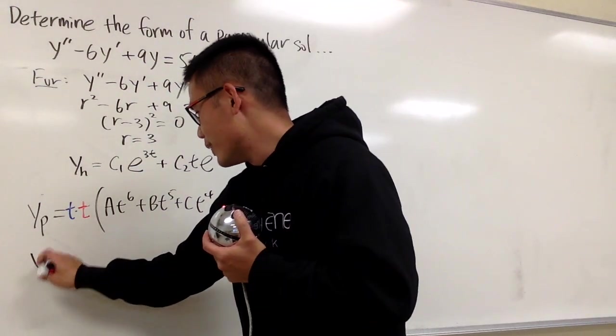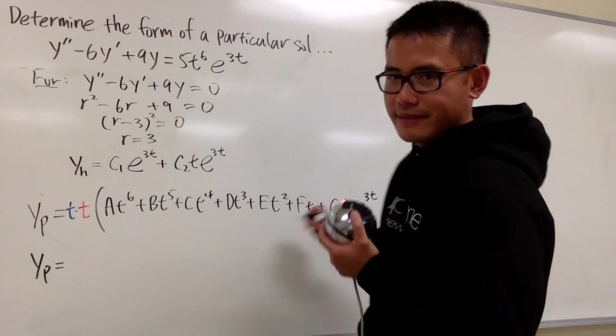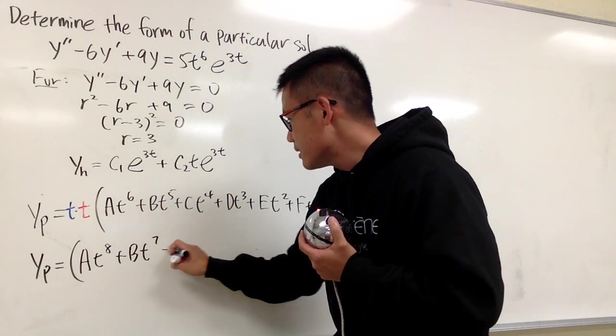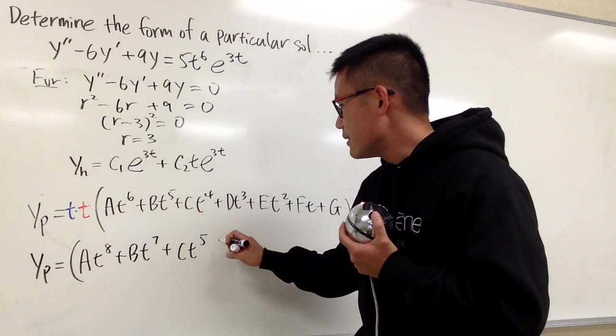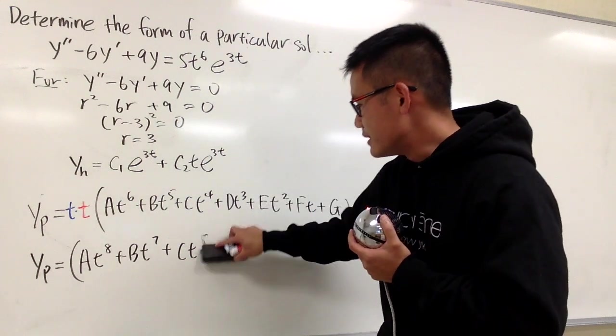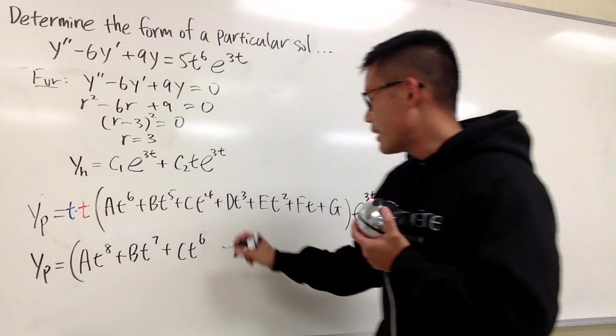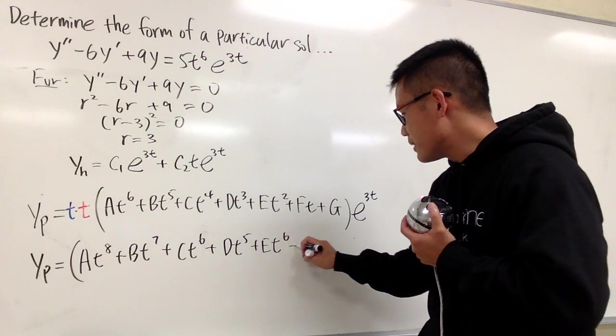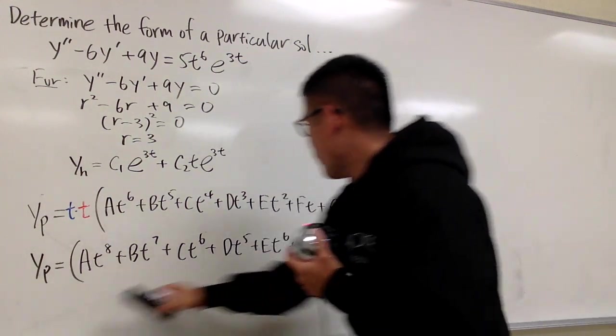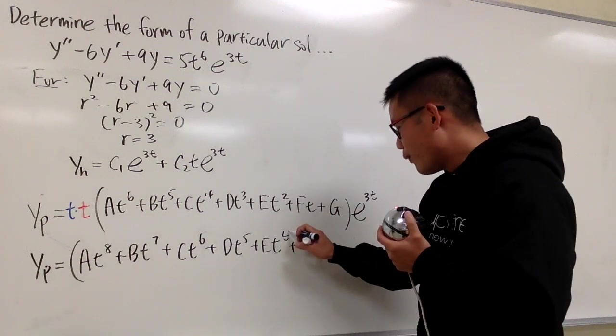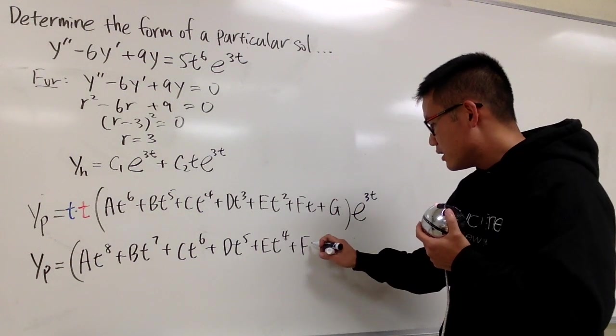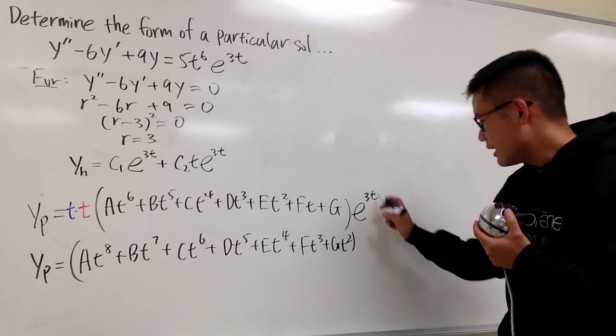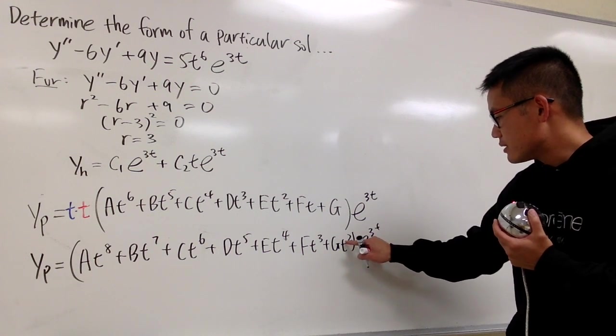At the end, I will just write this down legitimately. t squared times all that. And here we go. We will have a t to the 8th power, and then plus b t to the 7th, plus c t to the 6th. Because I'm multiplying by two of them. And then plus d t to the 5th, plus e t to the 4th, and then f t to the 3rd power, and then this is plus g t squared. And close that, and you have e to the 3t, like this.